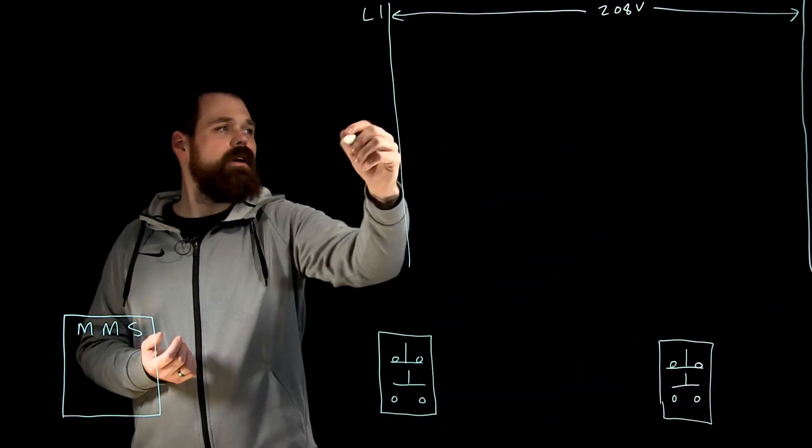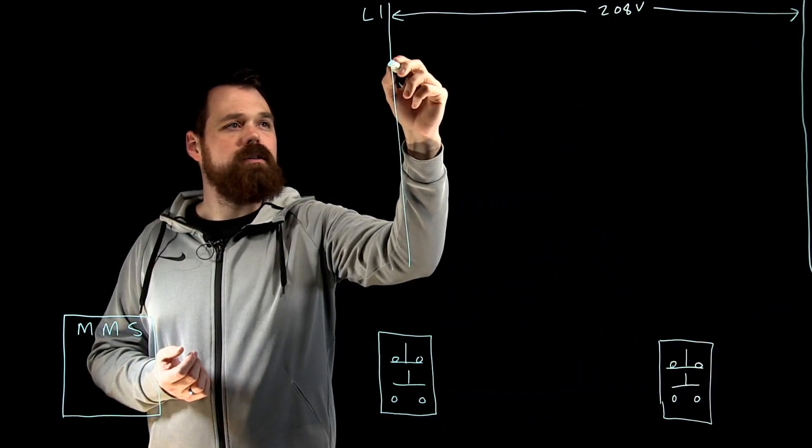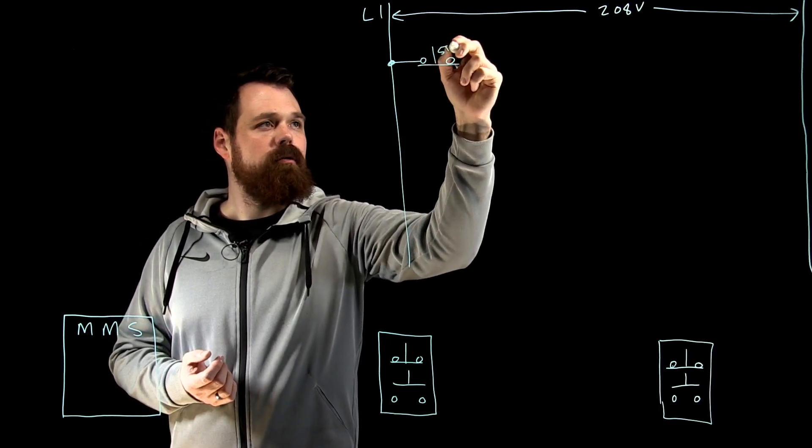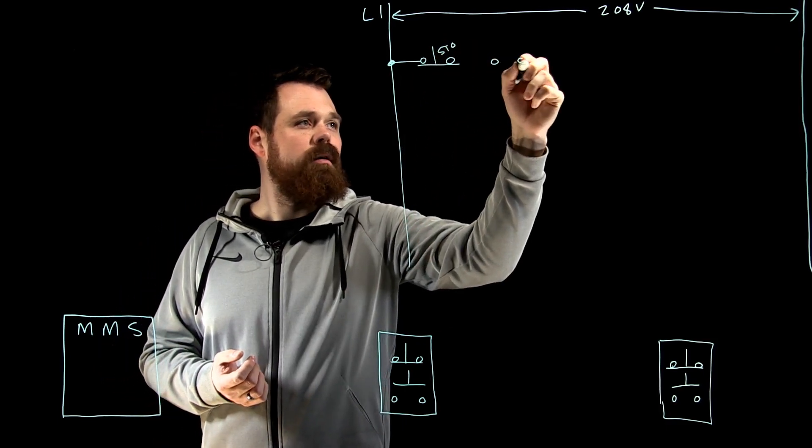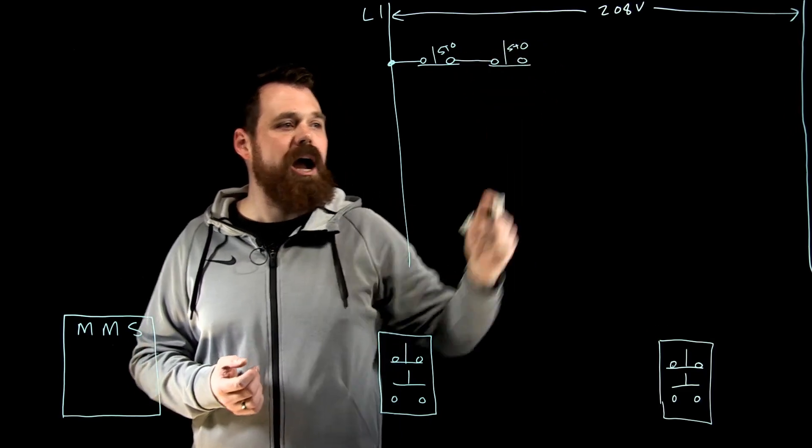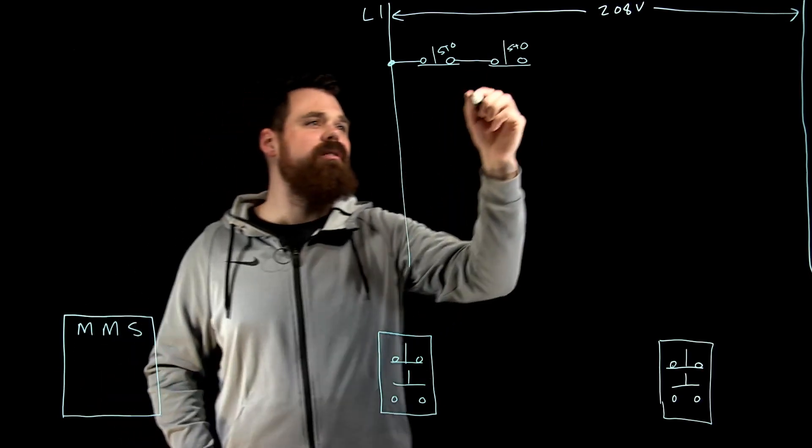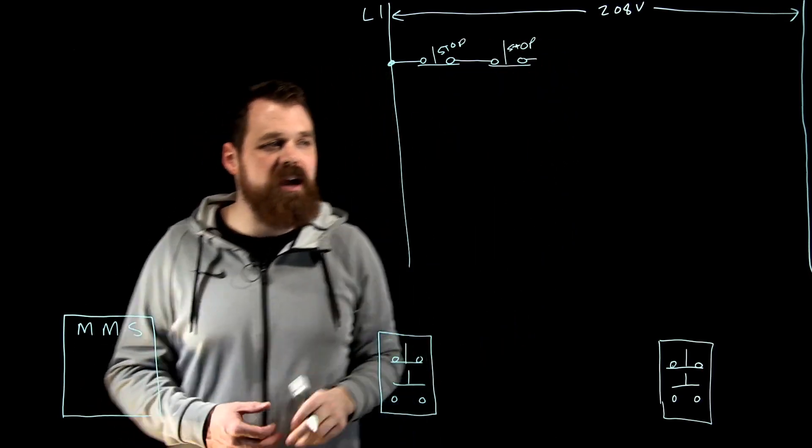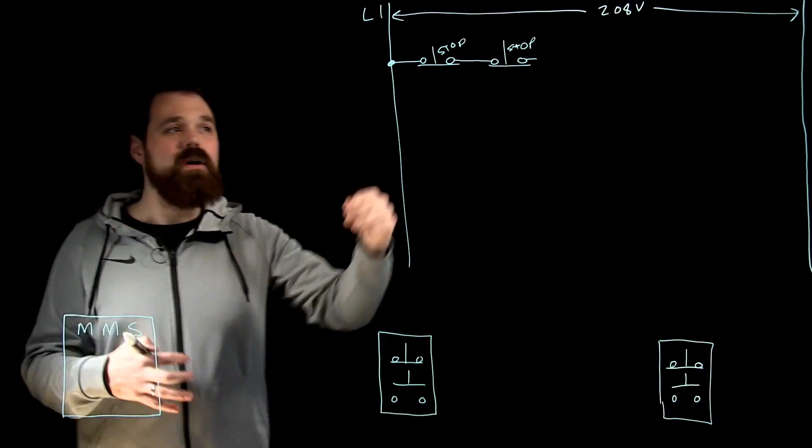So what I would do is I know that my stop buttons have to be in series with each other. Now the reason they have to be in series is when I press either one of these buttons, I need it to open that set of contacts and interrupt the flow of current.